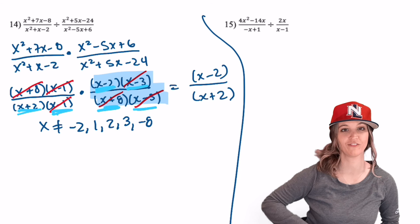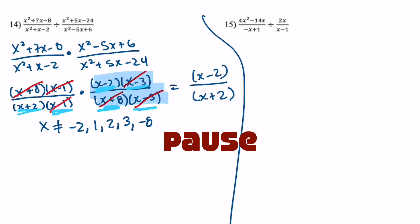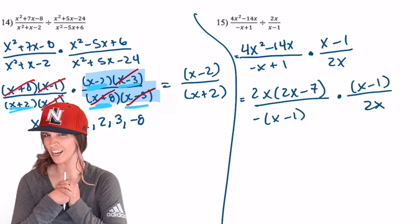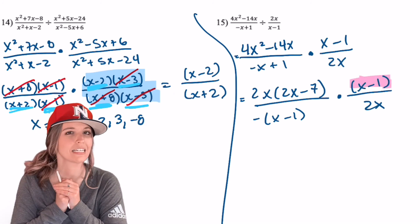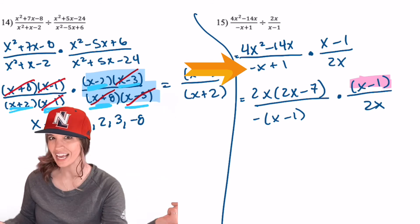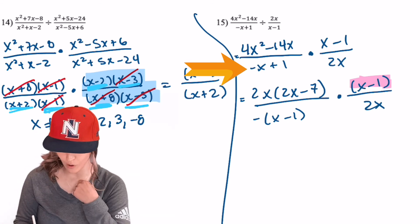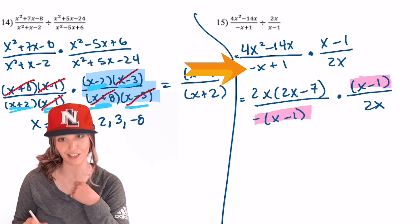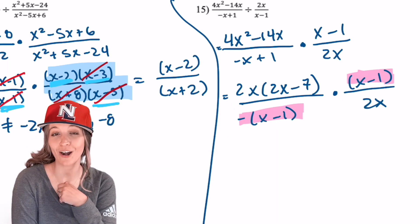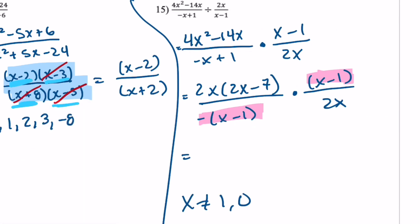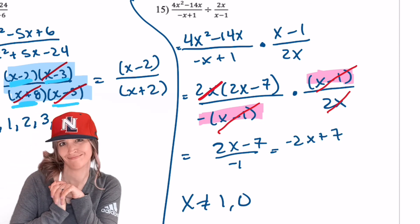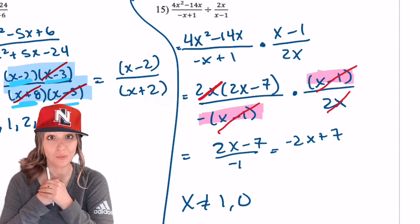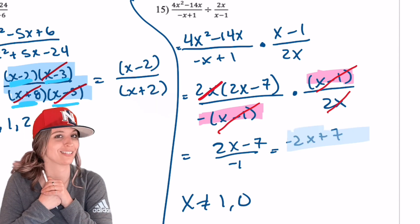You're getting these steps. Go do 15. I noticed as I was factoring here, I had this x minus 1 up in the numerator and I really would like to divide that out. We had negative x plus 1 in the denominator. If we factor out that negative, we can make it look like x minus 1 and divide those out. Let's state our restrictions and simplify. It looks like we get 2x minus 7 divided by negative 1. So I can divide that negative 1 through and get negative 2x plus 7 with restrictions at x equals 1 and 0.